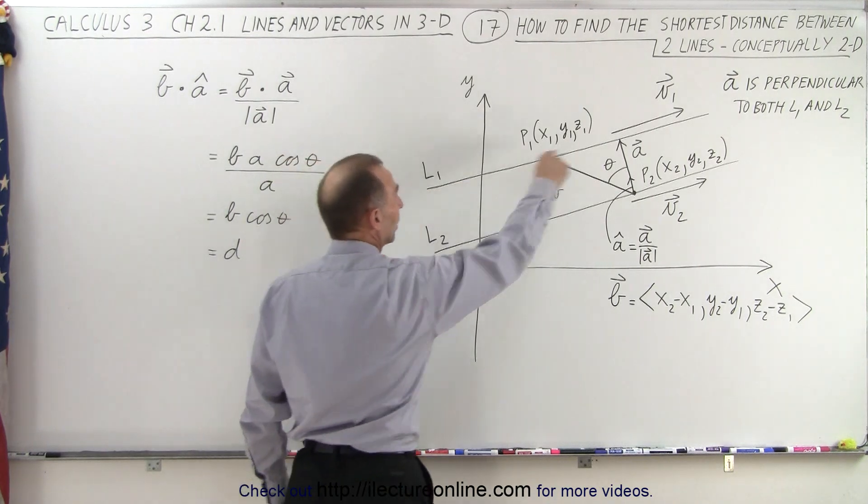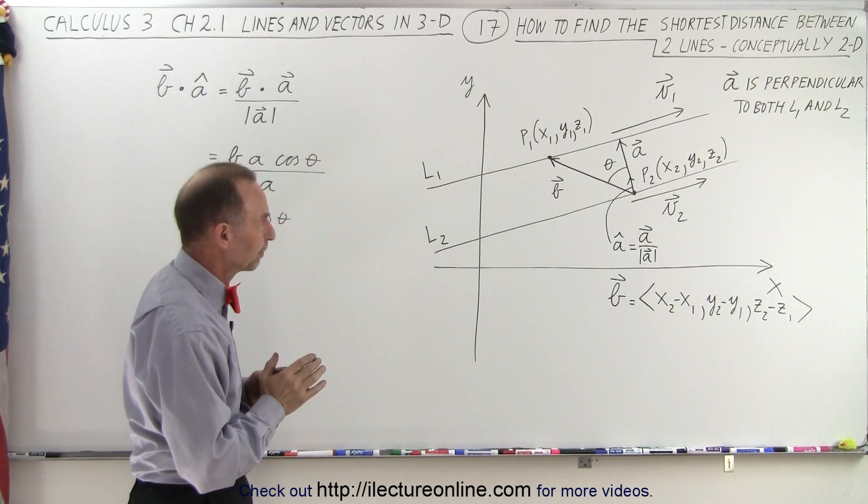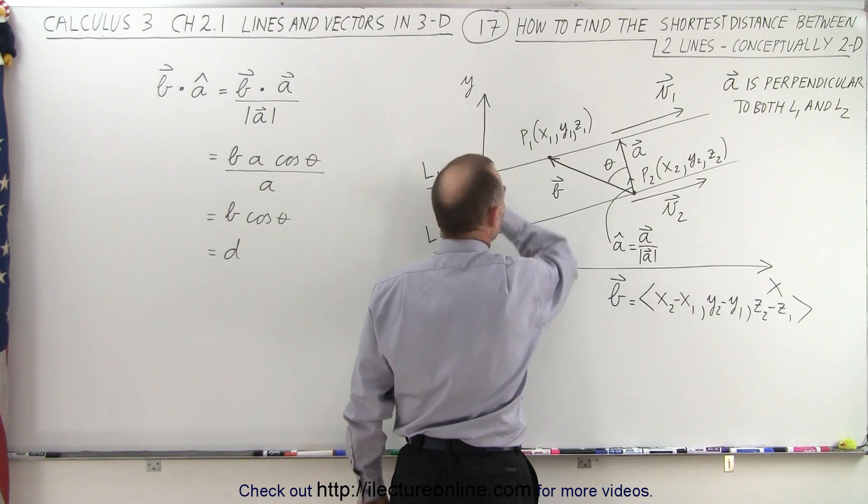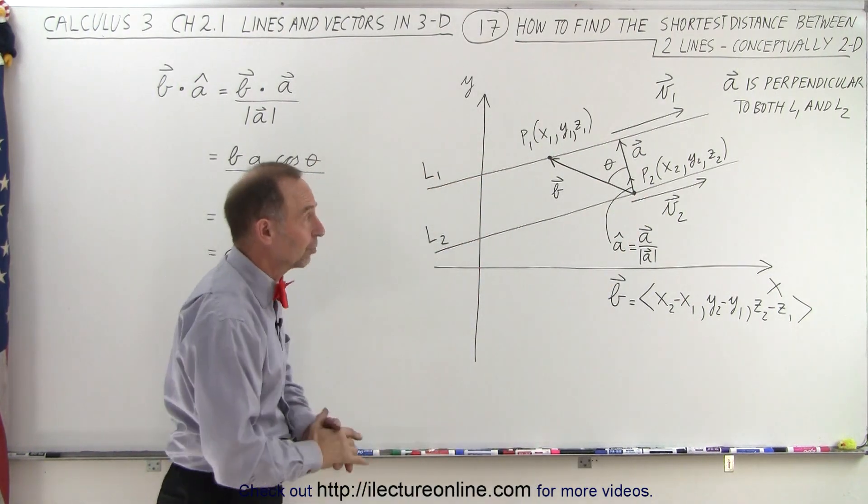So let's say we have two lines, line 1 and line 2, and to make it a little bit easier, we made them parallel to one another, so that the vectors, the parallel vectors V1, which is parallel to L1, and V2, which is parallel to L2, should also be parallel to each other.